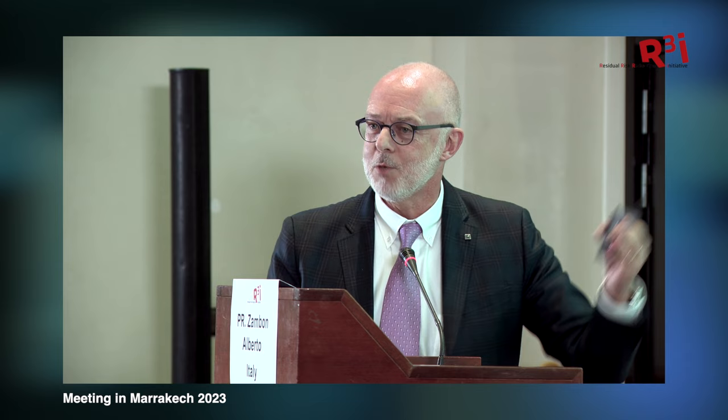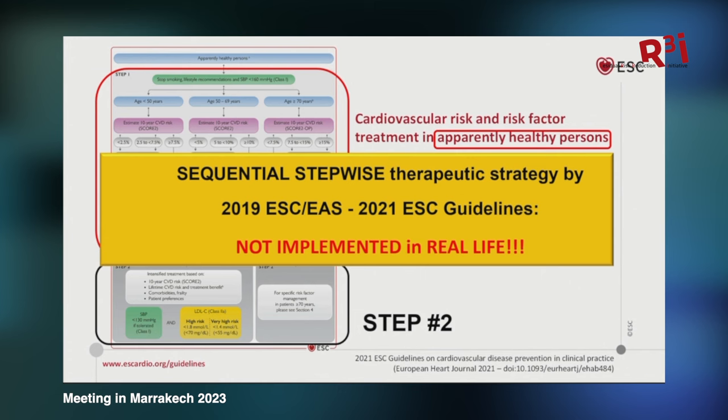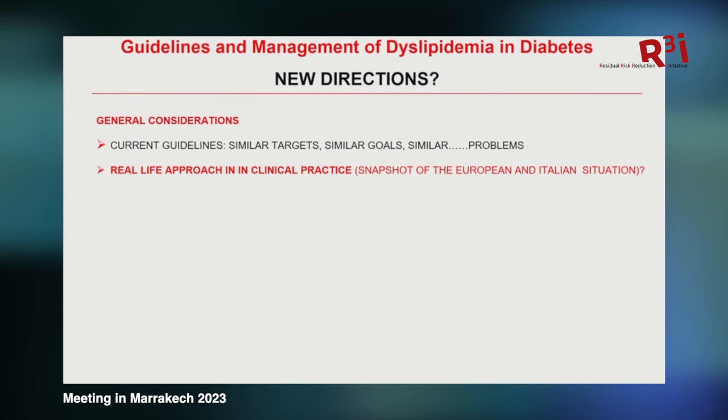This is a failure in our daily practice. EuroSPIRE first, for those old enough — late 1980s — patients at goal: 28%. EuroSPIRE five, 30 years later, patients at goal: 30%. Different goals, different approaches, 30 years — and we can't go beyond 30%. There is definitely something wrong.